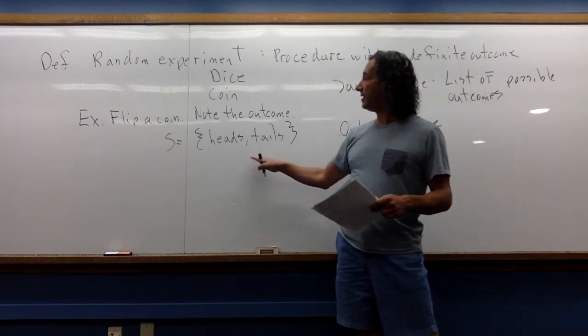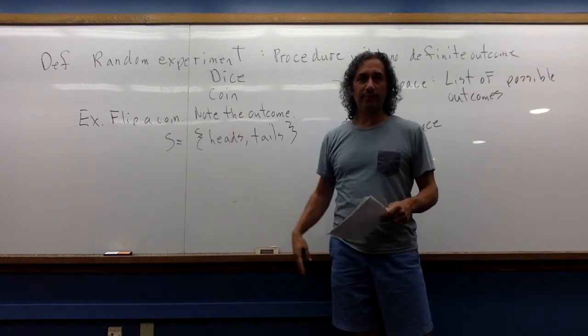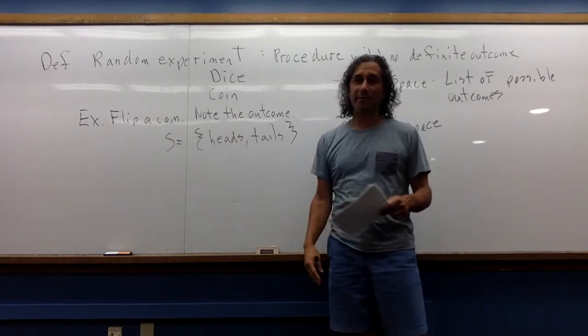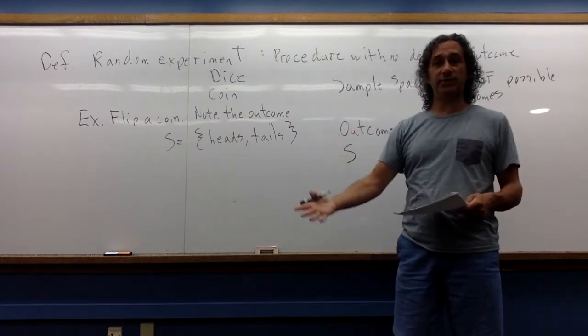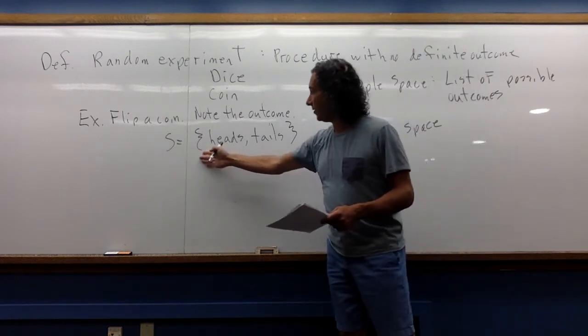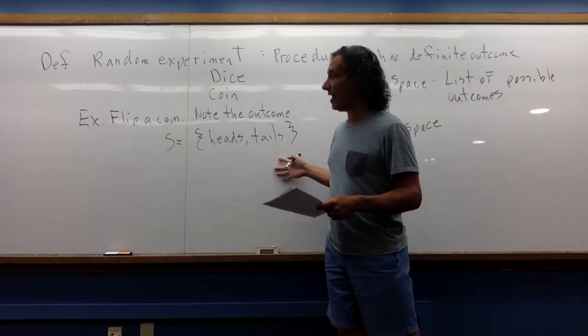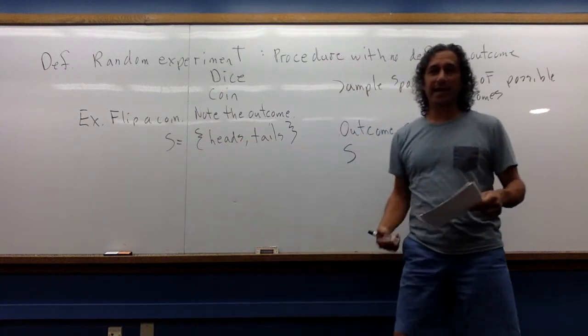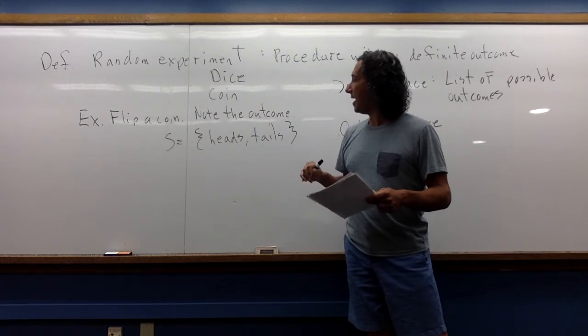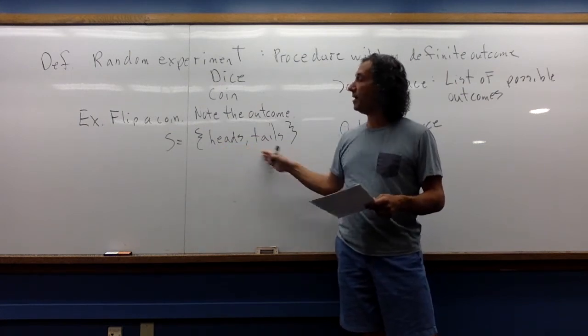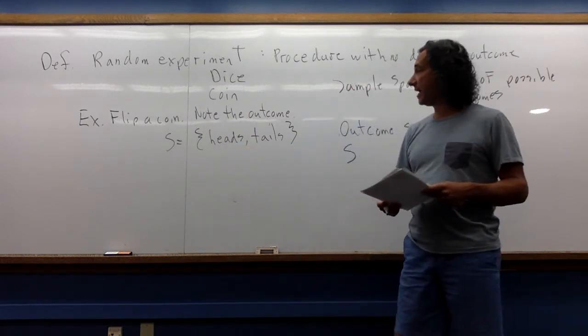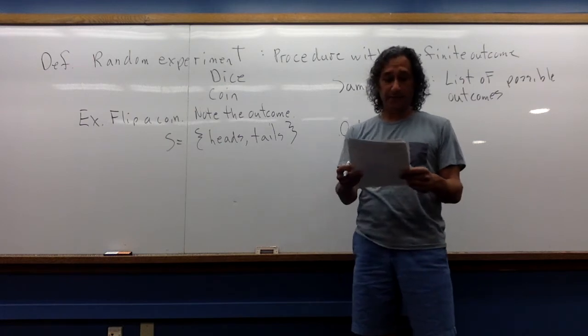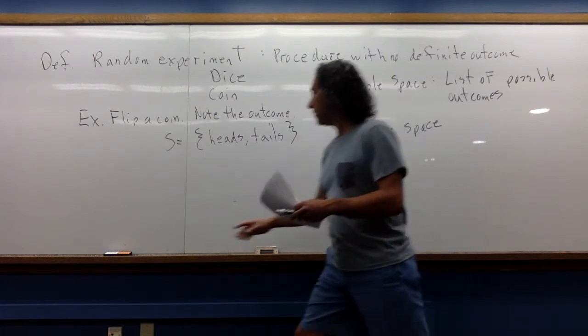And what we're going to do is we're going to count some subset of this to help us determine probabilities. So just as an example, the probability of heads, you probably know that the probability of heads is one out of two. So how'd you do that? Well, you found this set in your mind, you counted the total number of outcomes, counted the number of ways you can get heads, and took the number of ways you can get heads, which is just one, divided by the total size of the sample space, and you got one out of two. So that's one example.